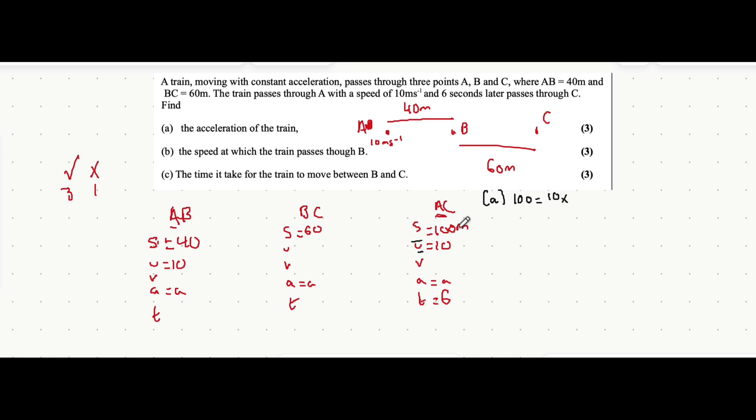The equation linking s, u, a, and t is s = ut + ½at². Let me write out the SUVAT equations: v = u + at, v² = u² + 2as, s = ut + ½at², and s = vt - ½at². So s is 100, equal to u which is 10 times t which is 6, plus a half times a times 6 squared. 10 times 6 is 60, and 6 squared is 36 times a half is 18.